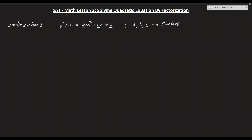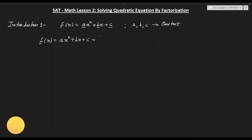Now what do we mean by factorization? The goal here is to write this quadratic function — Ax squared plus Bx plus C — in the factorized form: (Ax + B)(Px + Q). We call this quadratic because the highest power of this function is 2.